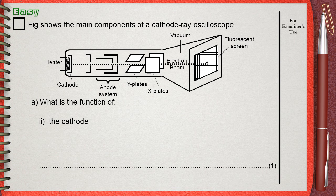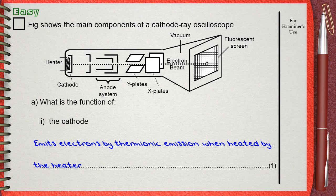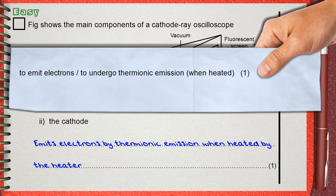So we can say that the cathode emits electrons by thermionic emission when heated by the heater. This is also for one mark, to emit electrons, or you can say to undergo thermionic emission when heated.